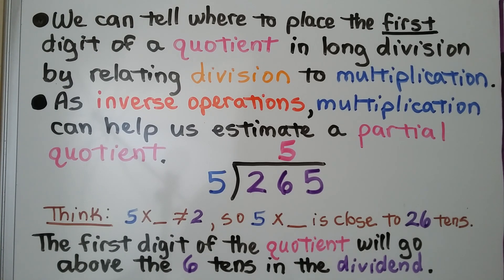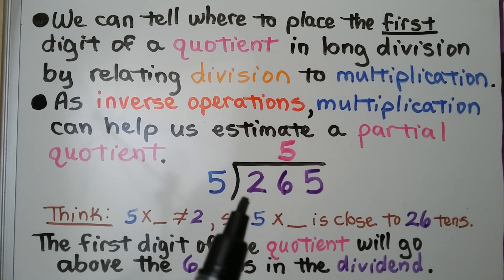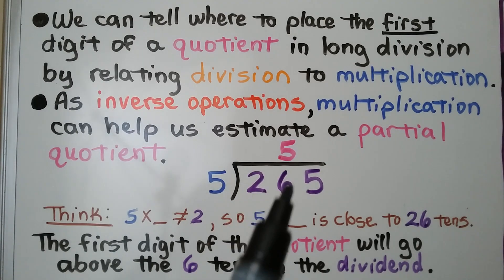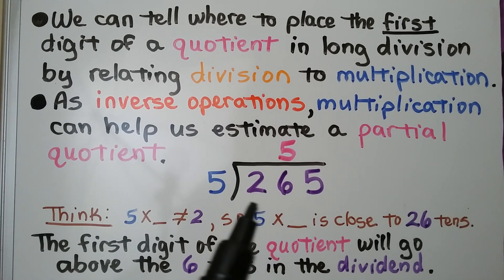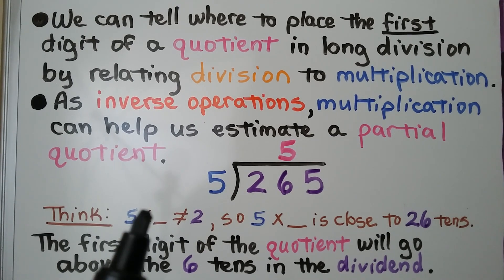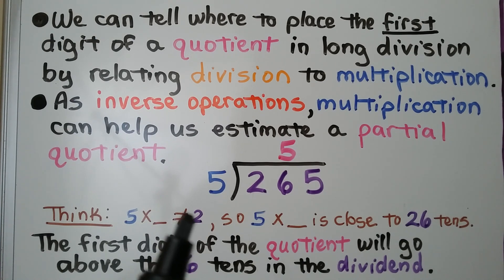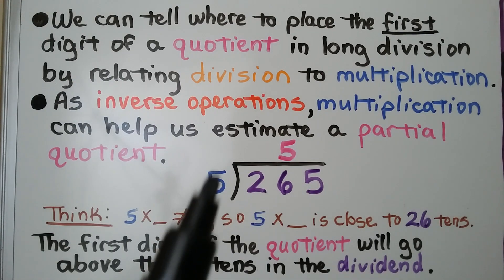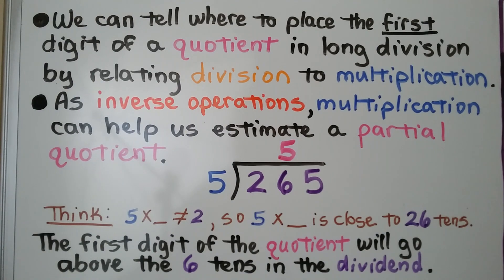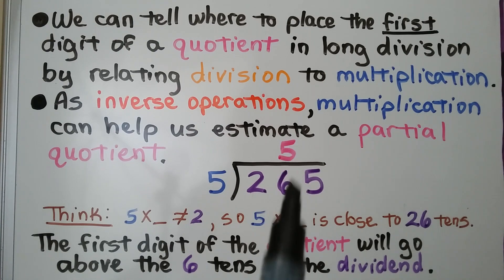Here we have 265 divided by 5. We look at this and say, can the 5 fit into the 2? No. We're going to have to include the hundreds and the tens as 26 tens. 5 fits into 26 tens. We think 5 times some number is close to 26 — that would be 5 times 5. The first digit of the quotient will go above the 6 tens in the dividend as 5 tens.